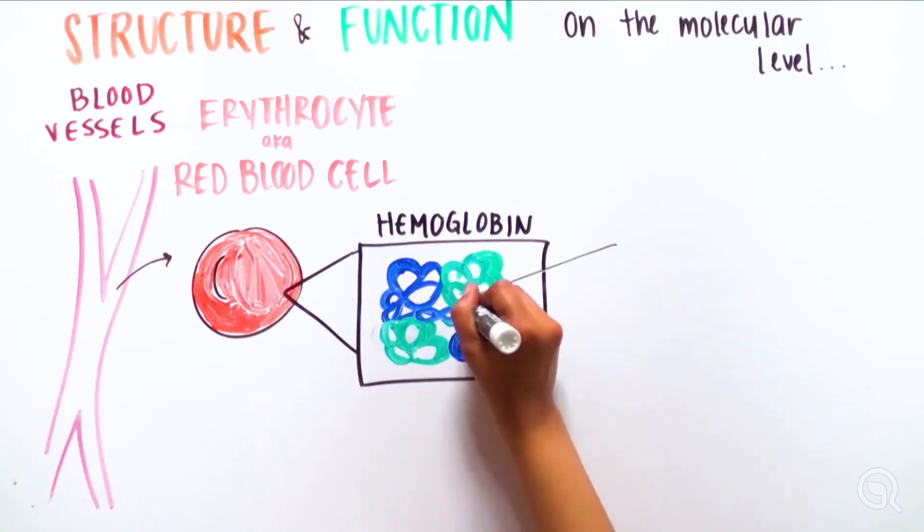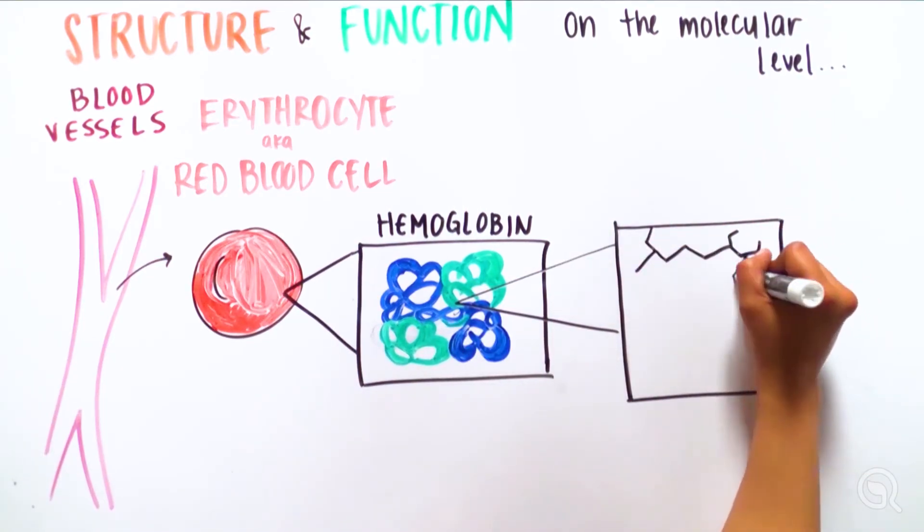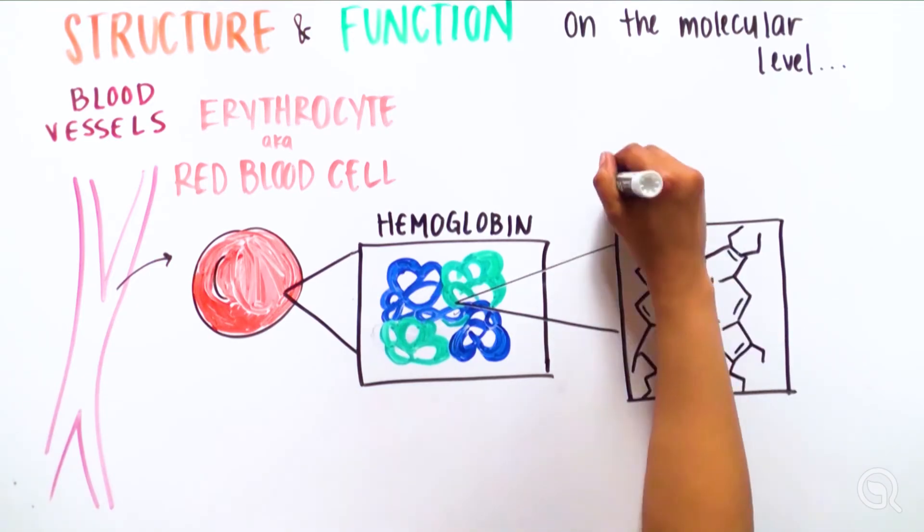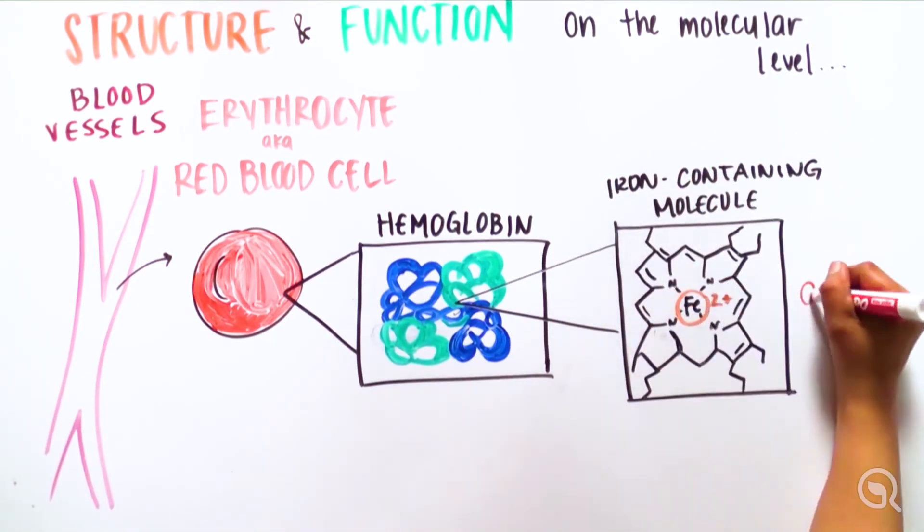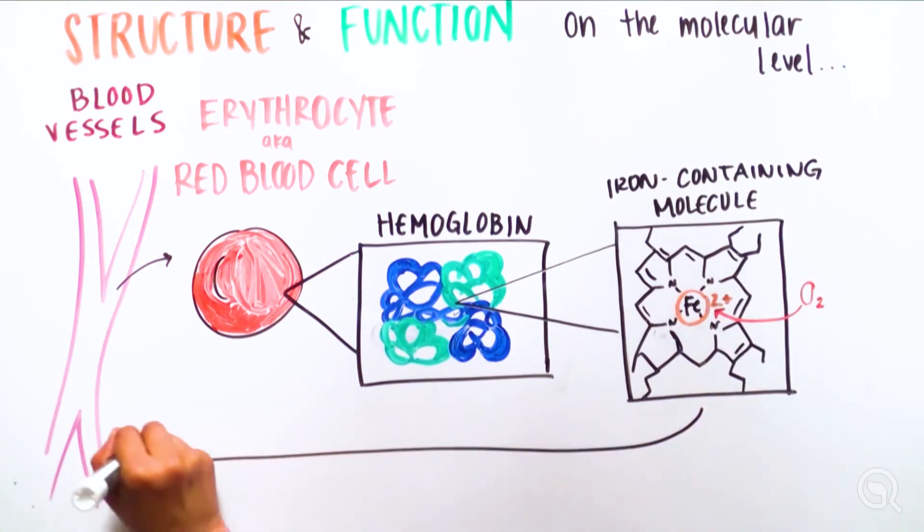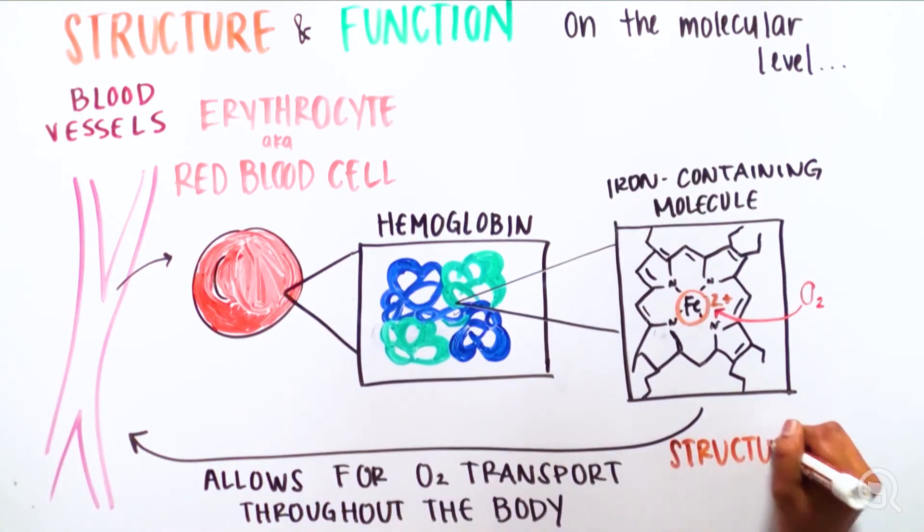In the center of each polypeptide is a positively charged iron-containing compound. For each iron-containing compound, a negatively charged oxygen binds to the positively charged iron. And this allows for the transport of oxygen in the blood throughout the body. Structure determines function in molecules like hemoglobin.